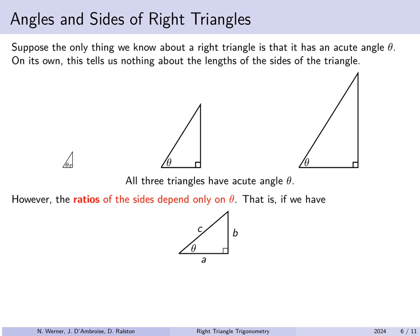If we set a right triangle with angle theta and side lengths a, b, and c, using c as the hypotenuse, then the ratio a over b, a over c, b over a, b over c, c over a, and c over b are all completely determined just by the angle theta. We are not claiming that the lengths a, b, and c are fixed — just that the ratios between them are.